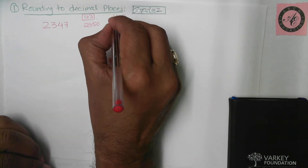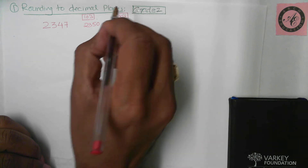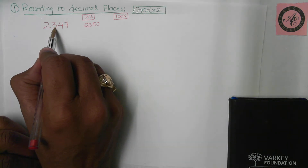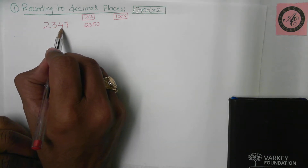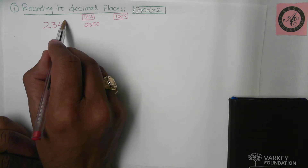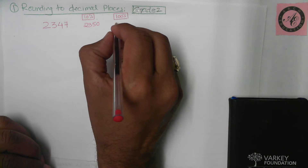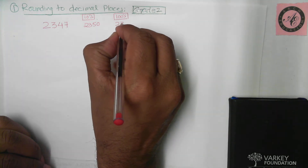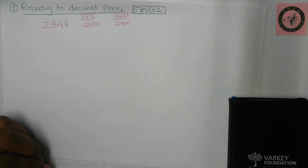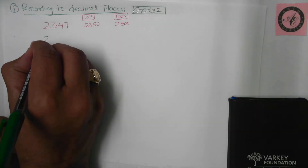Now rounding to the nearest hundreds: the hundreds digit is three, and we check the next digit, which is four. Four is less than five, so three hundred and forty-seven rounds down to three hundred. The answer is two thousand three hundred.